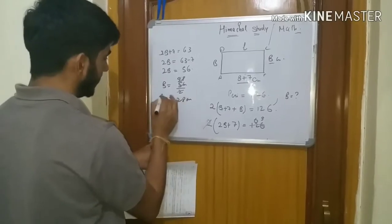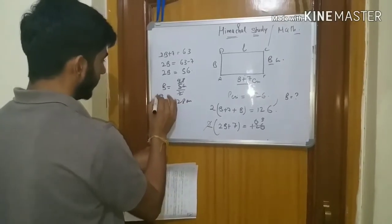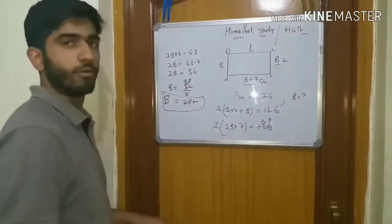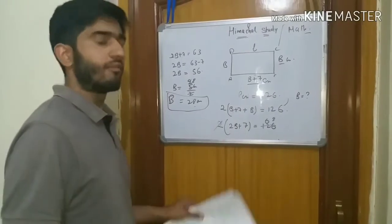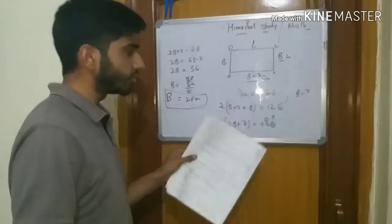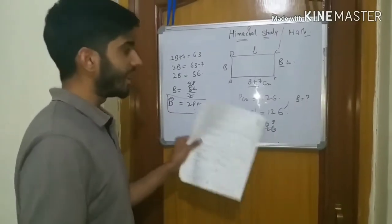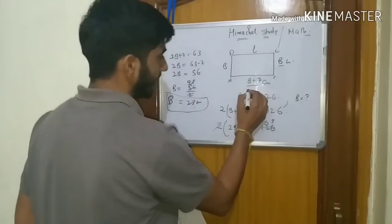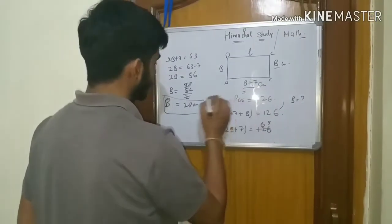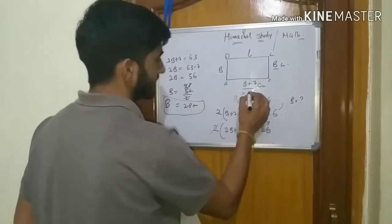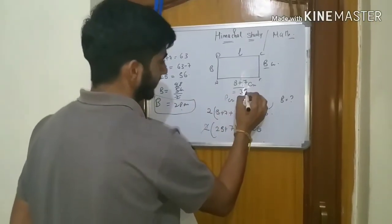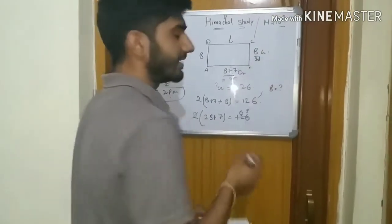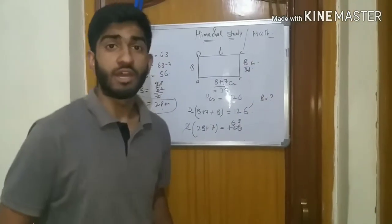So b equals 56 divided by 2, which equals 28 cm. If you understand the question and know the formula, the question is solved. The length is equal to 28 plus 7, which is 35. So the breadth is 28 cm and the length is 35 cm.